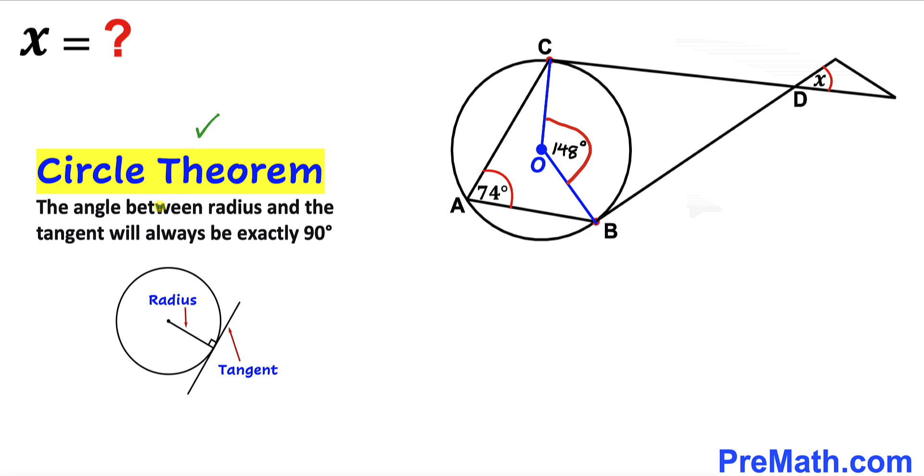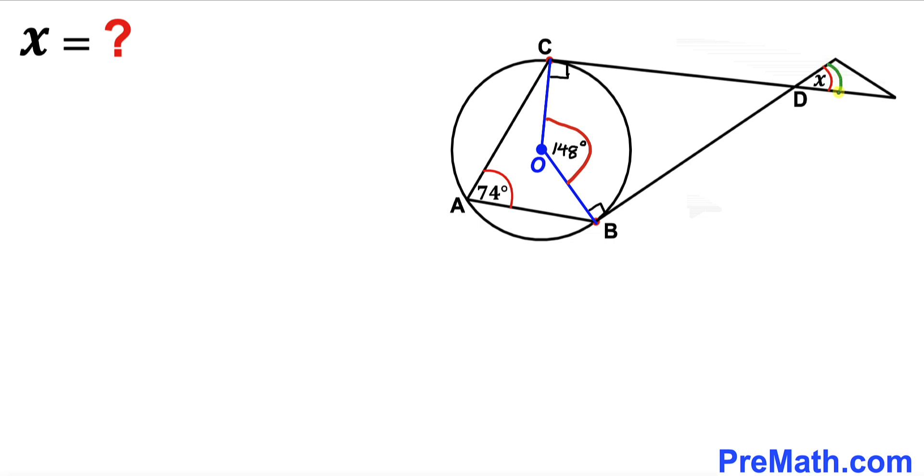Let's recall the circle theorem. According to this theorem the angle between the radius and the tangent will always be 90 degrees as you can see in this diagram. So these angles have got to be 90 degrees each because these are our two tangent lines and these are the radii. Now let's focus on this angle x.